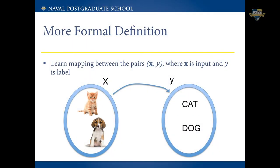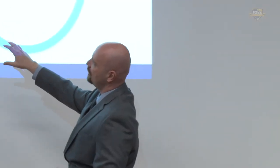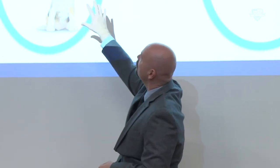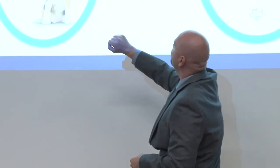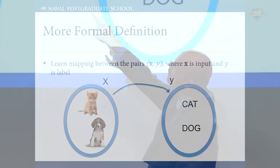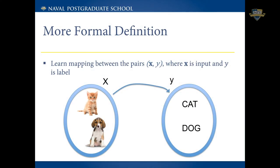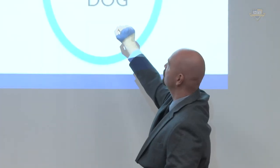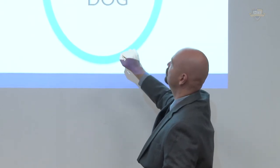Now I'll give you a more formal definition of supervised learning. What we're really trying to do within this framework is to learn a mapping between pairs of x and y, where x represents a set of images of cats and dogs, and we're trying to learn a mapping function between that input and an output that represents categorical labels of those images. The function f(x) is the mapping function we're trying to learn.